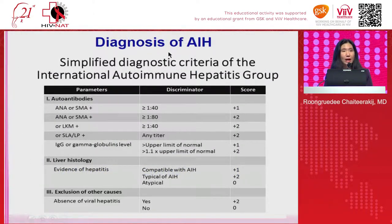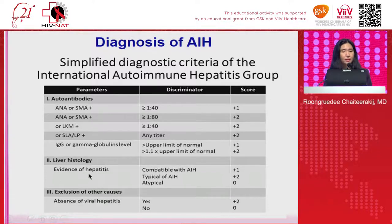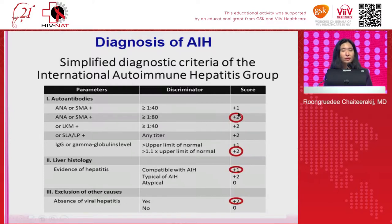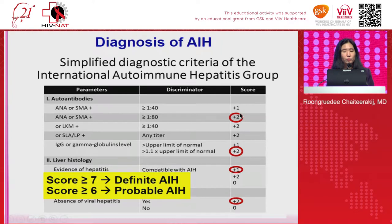To make the diagnosis of AIH, we use the simplified diagnostic criteria, which comprise four components: first, autoantibody — either ANA or anti-smooth muscle — positive; second, gamma globulin or IgG elevation; third, evidence of hepatitis on liver histology; and fourth, you must exclude other causes such as viral hepatitis, drug-induced hepatitis, fatty liver, or alcohol. This patient scored seven, which means the diagnosis of AIH was considered definite.